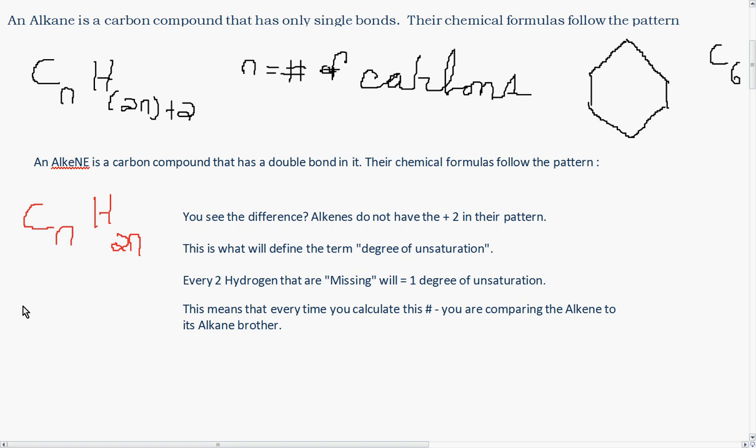This is what will define the term degree of unsaturation. Every 2 hydrogen that are missing will equal 1 degree of unsaturation. This means that every time you calculate this number, you are comparing your alkene to its alkane brother.